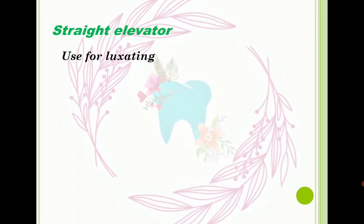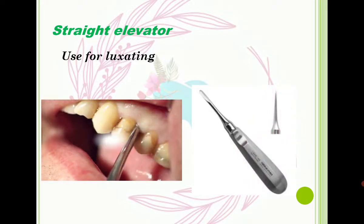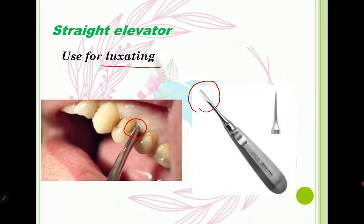The first elevator is called a straight elevator and it is used for luxating. Pay attention to the blade of a straight elevator — it is inserted under the gingiva and we can start luxating. This movement — luxating — decreases the attachment between the PDL and alveolar bone, so the tooth will be ready for extraction.